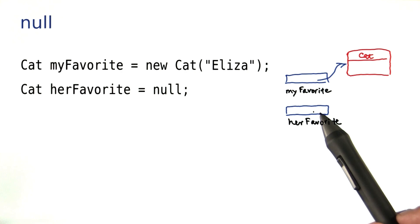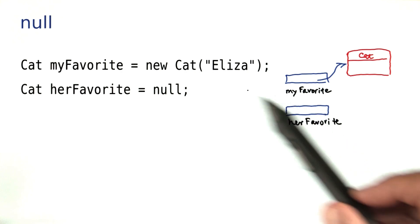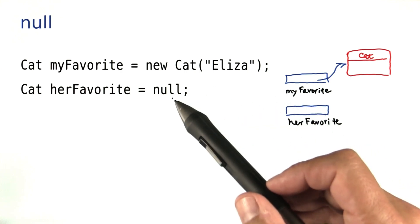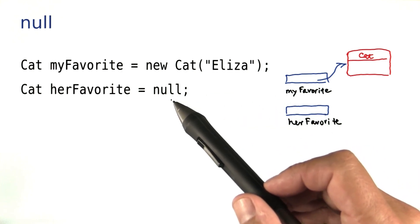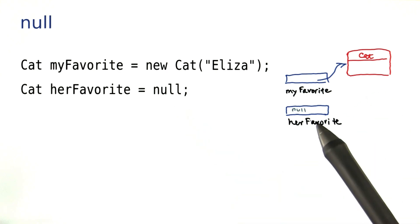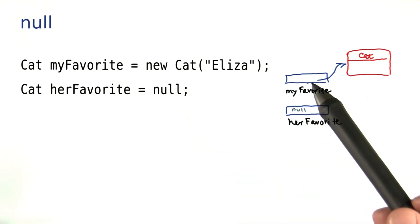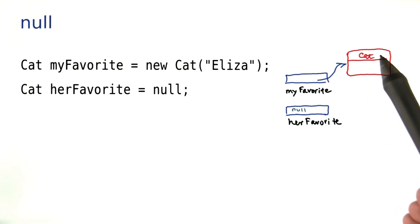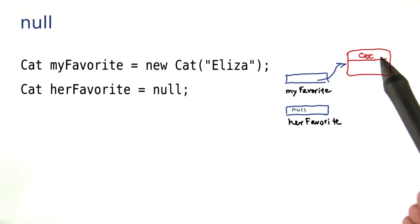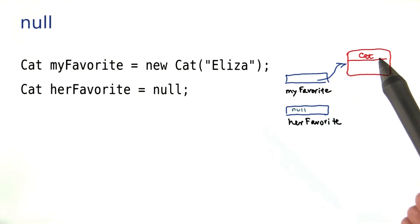In Java, you denote such a reference to no object at all with the keyword null. So this variable here holds the special null reference, while this variable here holds a reference to some cat object.